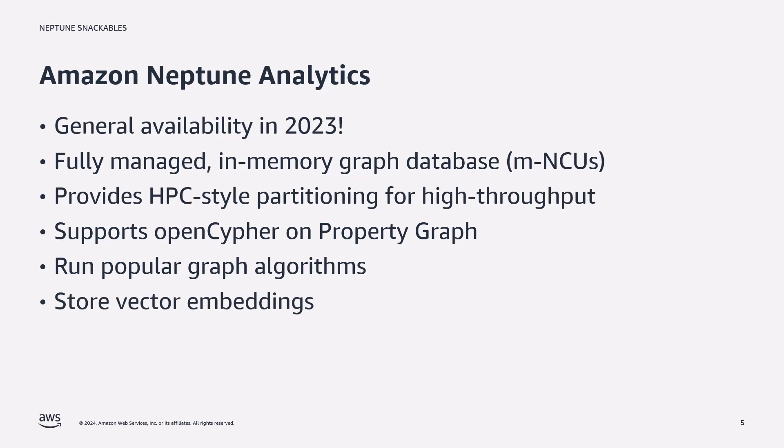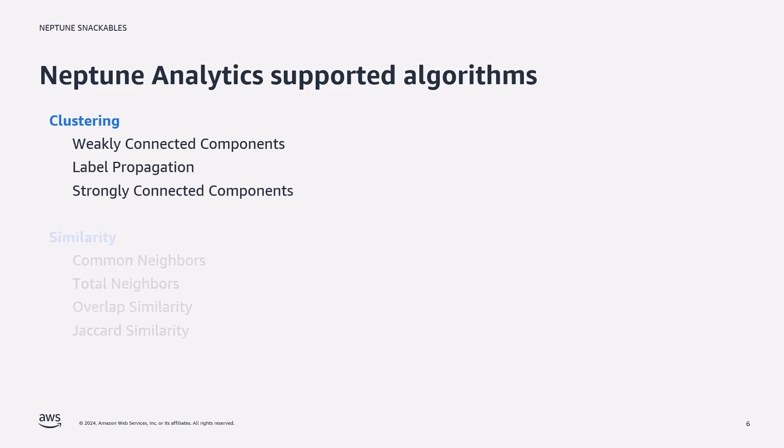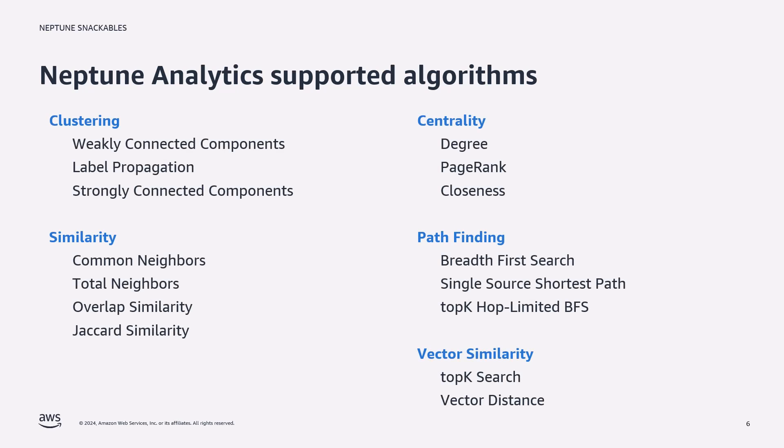Neptune Analytics also supports vectors, meaning you can store vectors as properties on your graph objects. These are the algorithms that Neptune Analytics currently supports, all callable directly from within OpenCypher queries. Notice the vector similarity algorithms such as top-K and vector distance — these help support next-generation vector search applications.